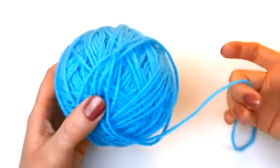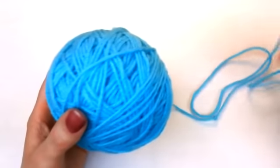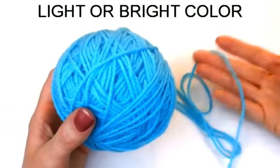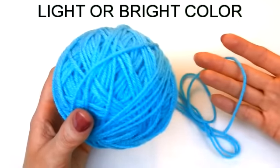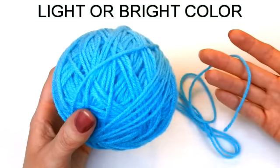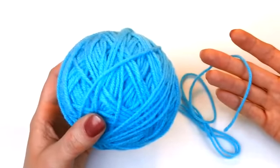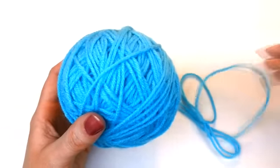When choosing a yarn, pick a color that is solid in color. Also make sure that it is a light or bright color. The reason I recommend this is because at first it is really hard to distinguish where your stitches are, especially if your yarn is too dark or multicolored.